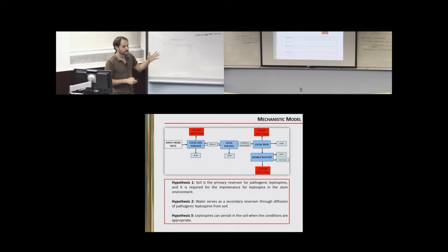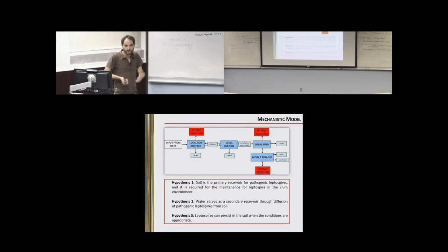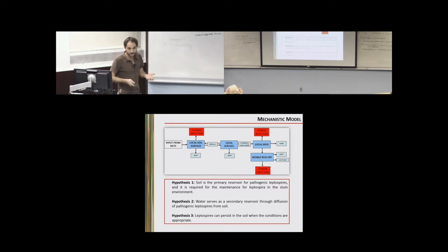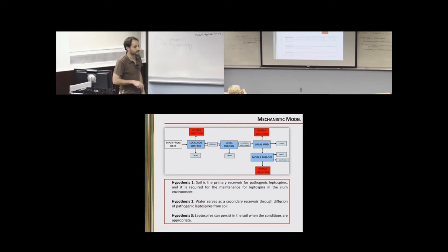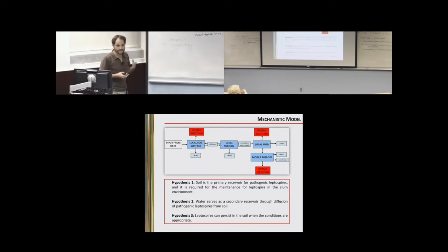Leptospira may diffuse into the subsoil — we don't know if there are any active procedures while Leptospira moves towards areas more favorable to their survival. They may survive in the subsoil where conditions are better. They may also percolate through the water and stay there. They can also die and be mobilized through rainfall events to form what we call local MOT and eventually mobile runoff, where people are more likely to be in contact. Our hypothesis is that soil is the primary reservoir for pathogenic Leptospira in the environment and required for maintenance of the disease, in the slum community at least.